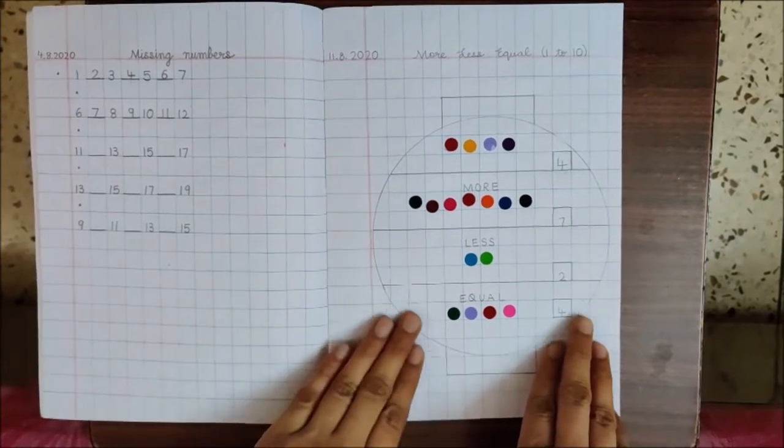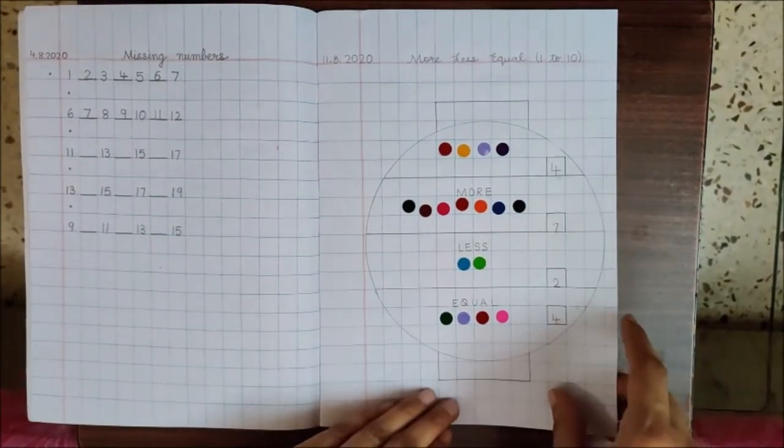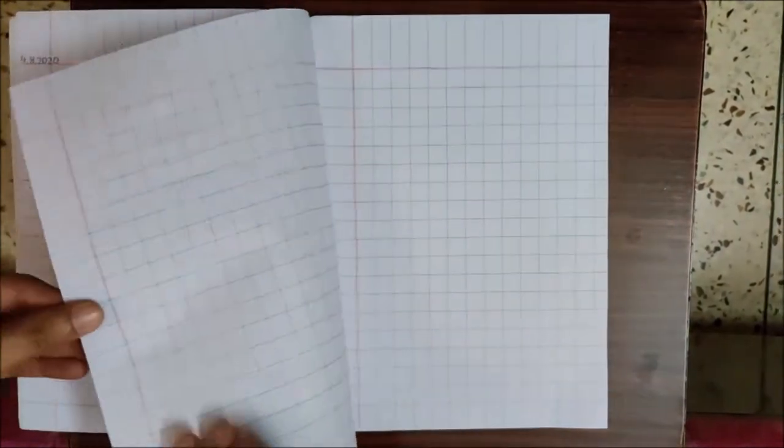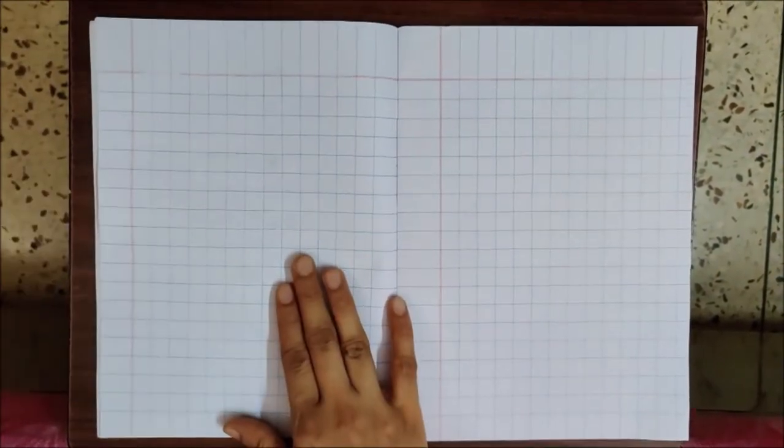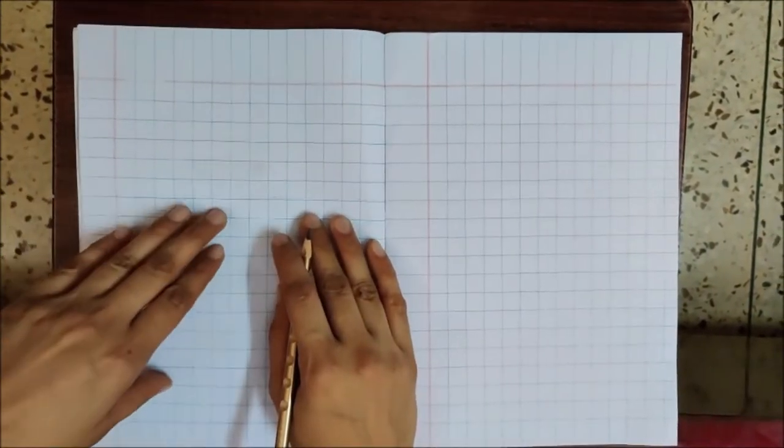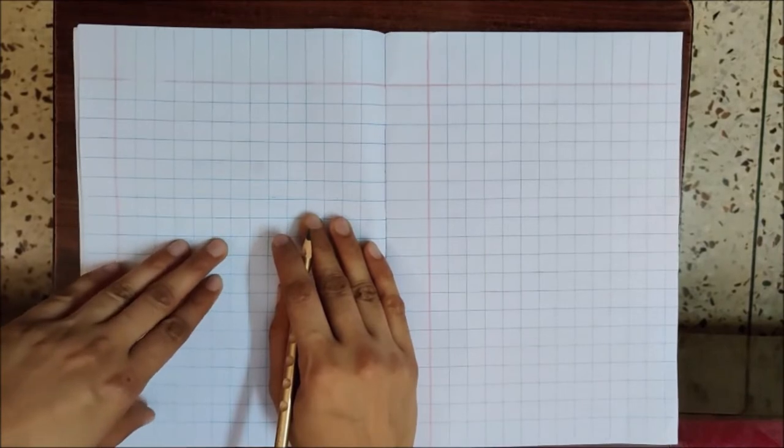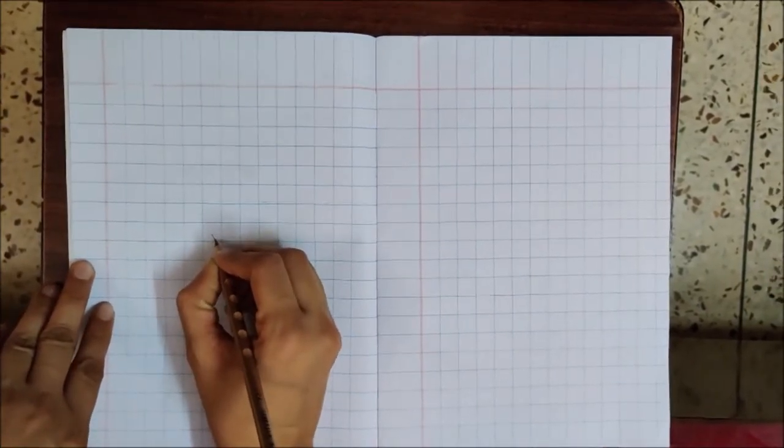In the live class, we did sticking of bindis on this page. So turn one more page. We are not going to do work on this page as you can have difficulty in writing on this page because of the bindis. So children here, just put a small cross.